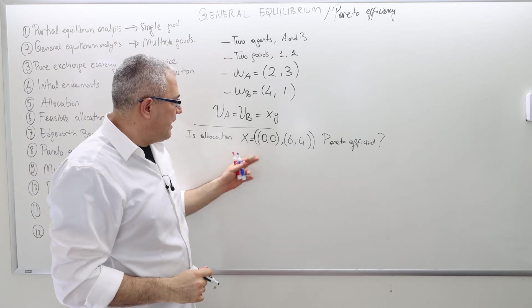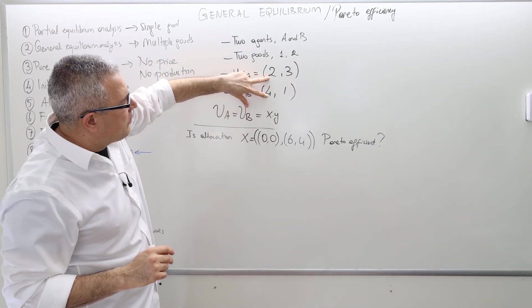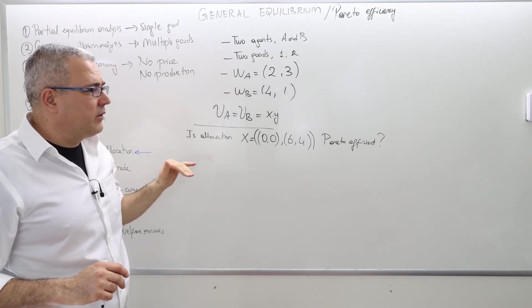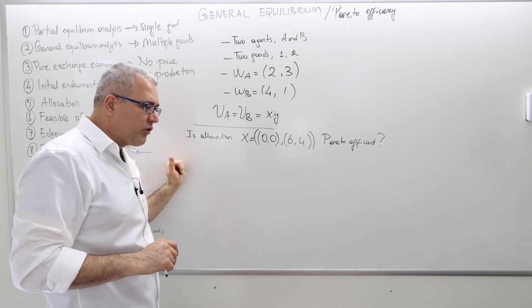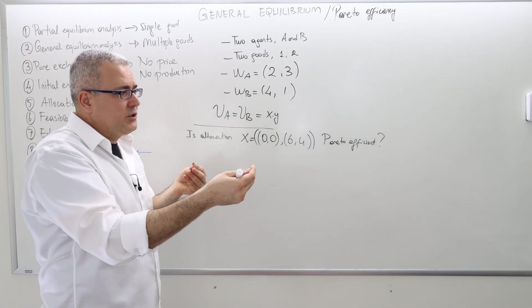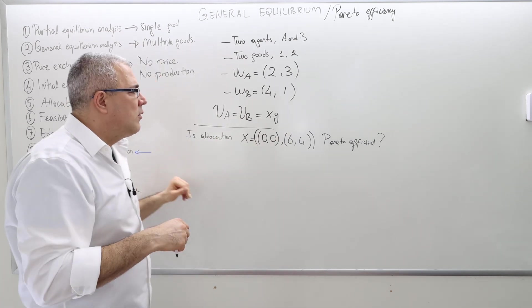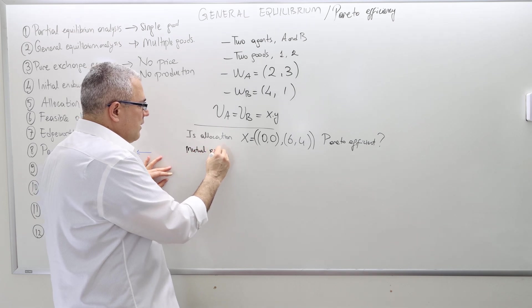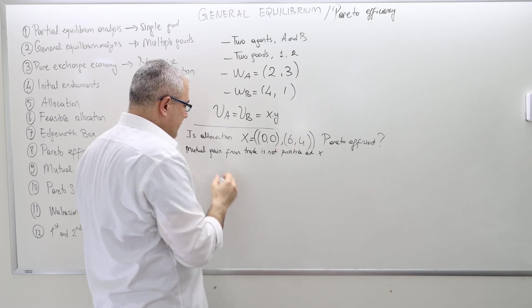The allocation says agent A gets nothing (0,0) and agent B gets everything. Is it feasible? Yes, because the total number of good one is 6 and the total number of good two is 4, so it is feasible. The second thing is, is mutual gain from trade possible? If they make an exchange and both agents will be happier, or at least one agent is strictly happier and the other has at least the same utility. This is impossible.